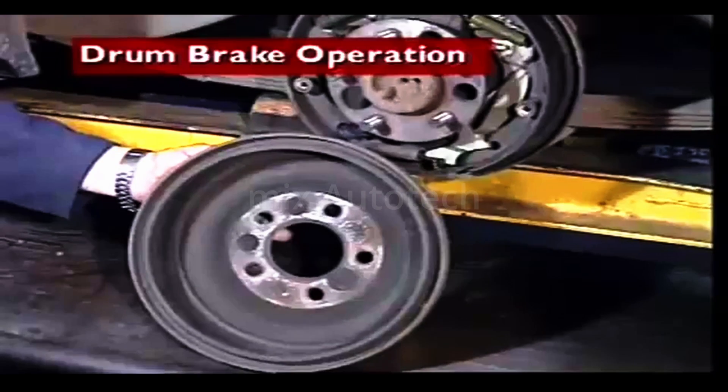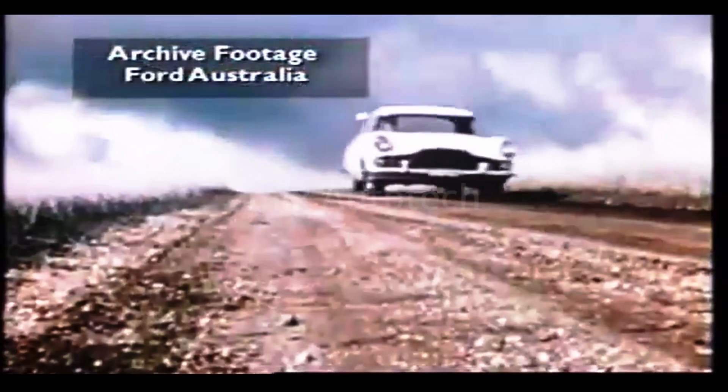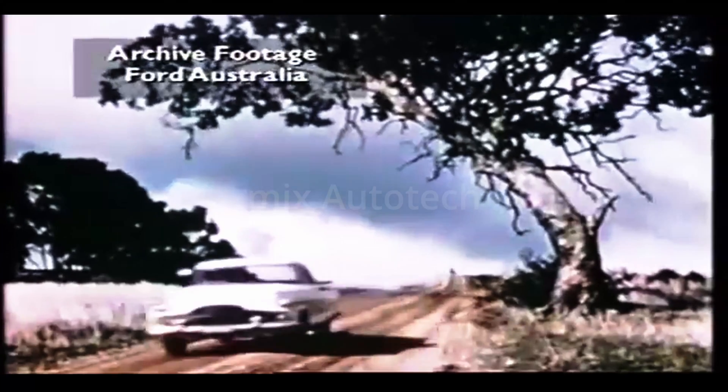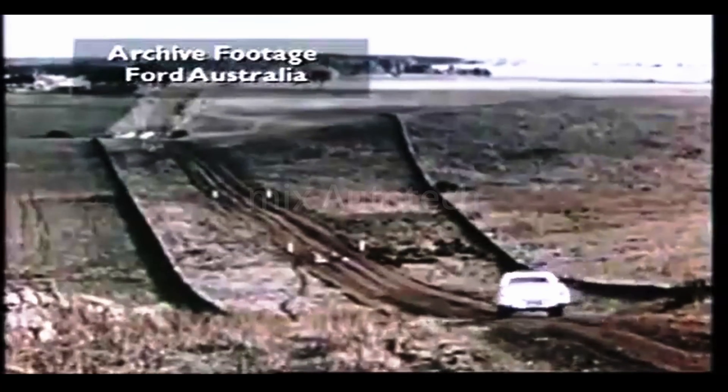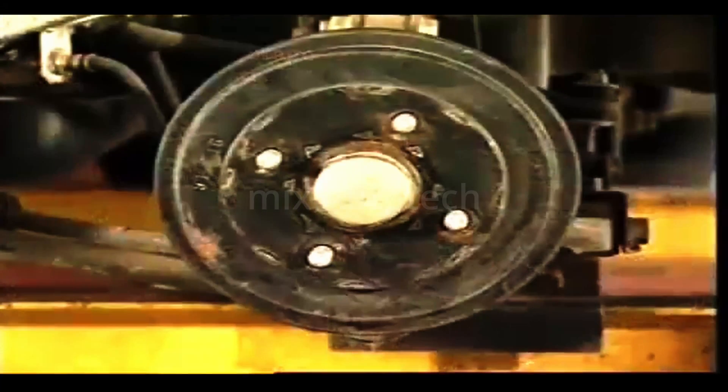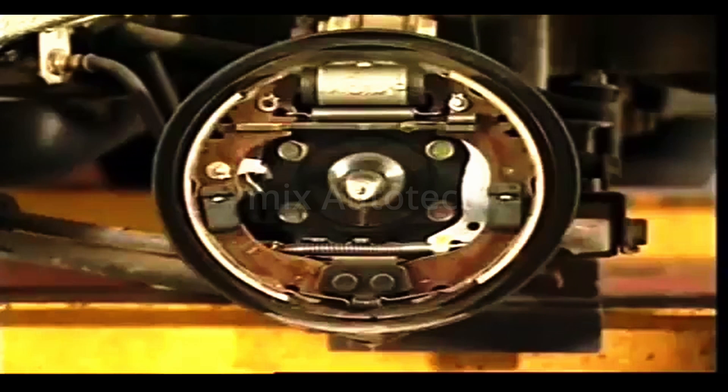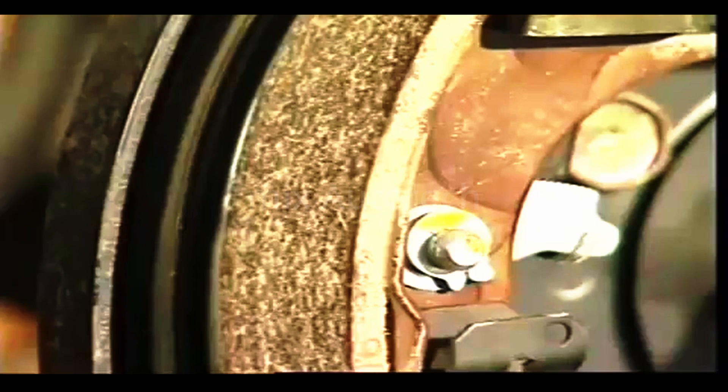This section examines the operation of the drum brake. Drum brakes were once common on all wheels of light vehicles, but on modern designs they are usually found on just the rear wheels in disc-drum combinations.